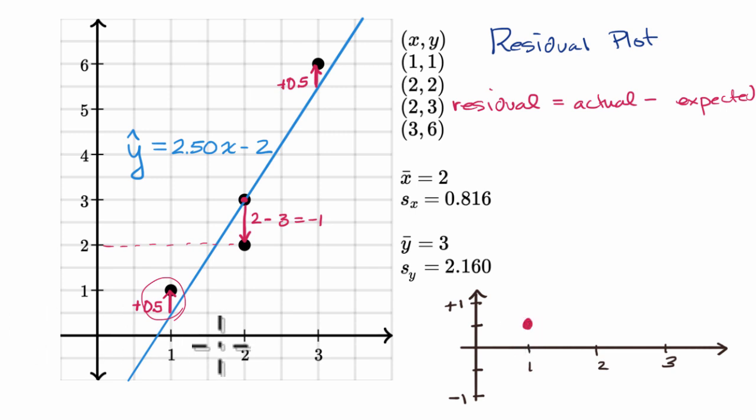When x equals two, we actually have two data points. First I'll do this one. When we have the point two comma three, the residual there is zero. So for one of them, the residual is zero. Now for the other one, the residual is negative one. For the other one, the residual is negative one, so we would plot it right over here.